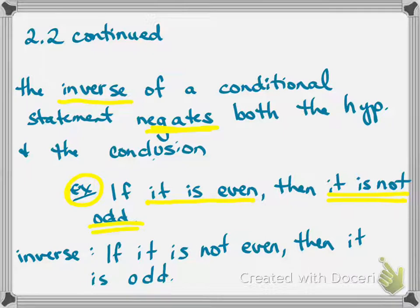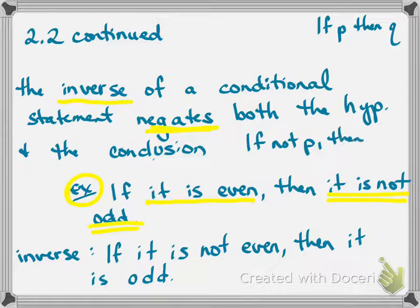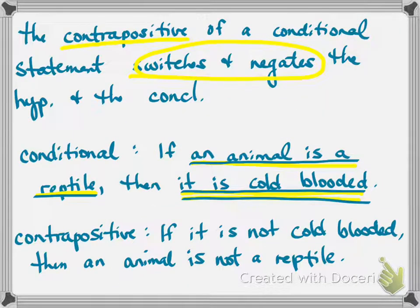So the inverse, if the original conditional is if P then Q, the inverse negates both of those. So it says if not P then not Q. That is the inverse in symbols. And the contrapositive, again, we always go back to the original. So if it switches and negates, then the contrapositive would be if not Q, then not P.